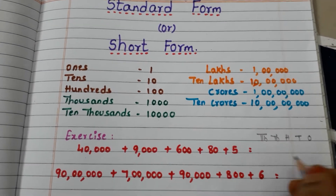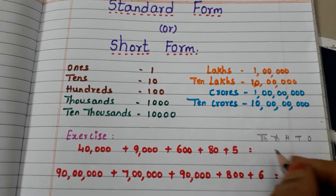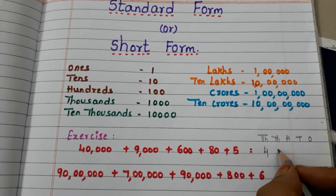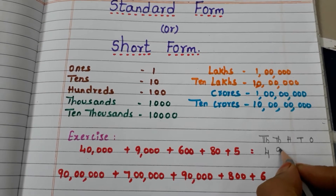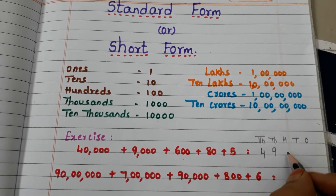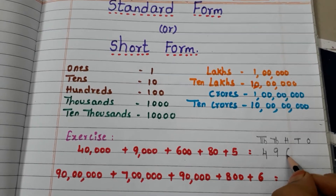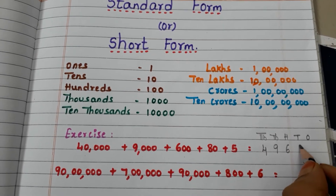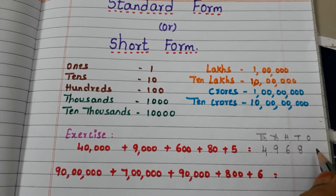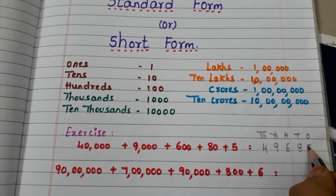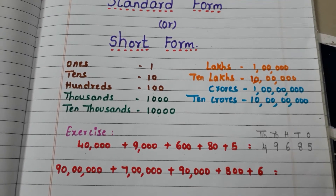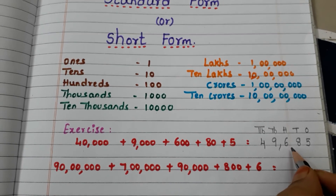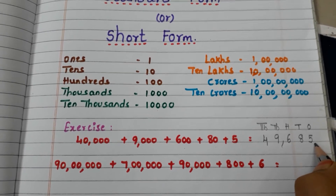Forty thousands means in the ten thousands place we have to write 4. Nine thousands — in the thousands place we write 9. Six hundred — in the hundreds place we write 6. Eighty — in the tens place we write 8. Five ones — in the ones place we write 5. So the number is forty-nine thousand six hundred and eighty-five.